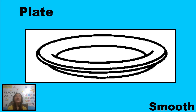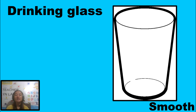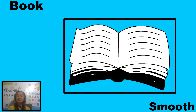Plate is smooth. Drinking glass is smooth. Book is smooth. So, those are examples of smooth objects.